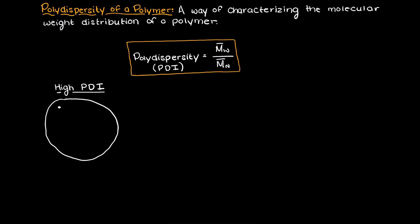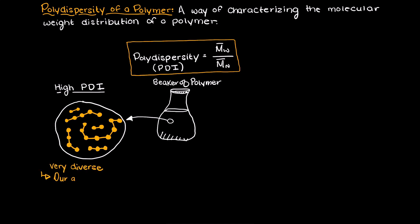Well, a high polydispersity index means that we will have a very diverse polymer sample. By that I mean that our average polymer chain length is highly varying.